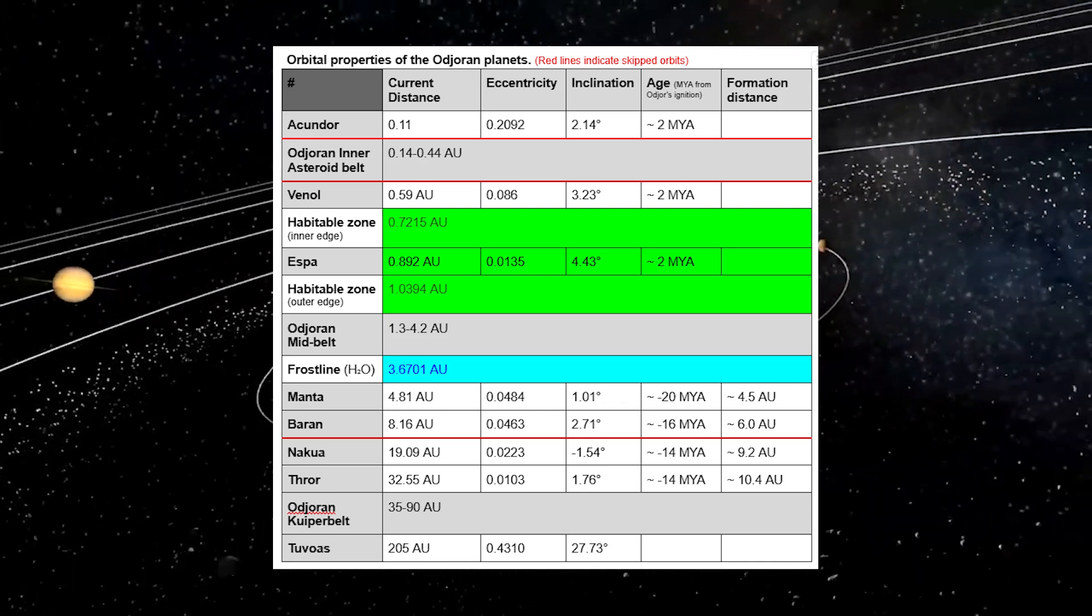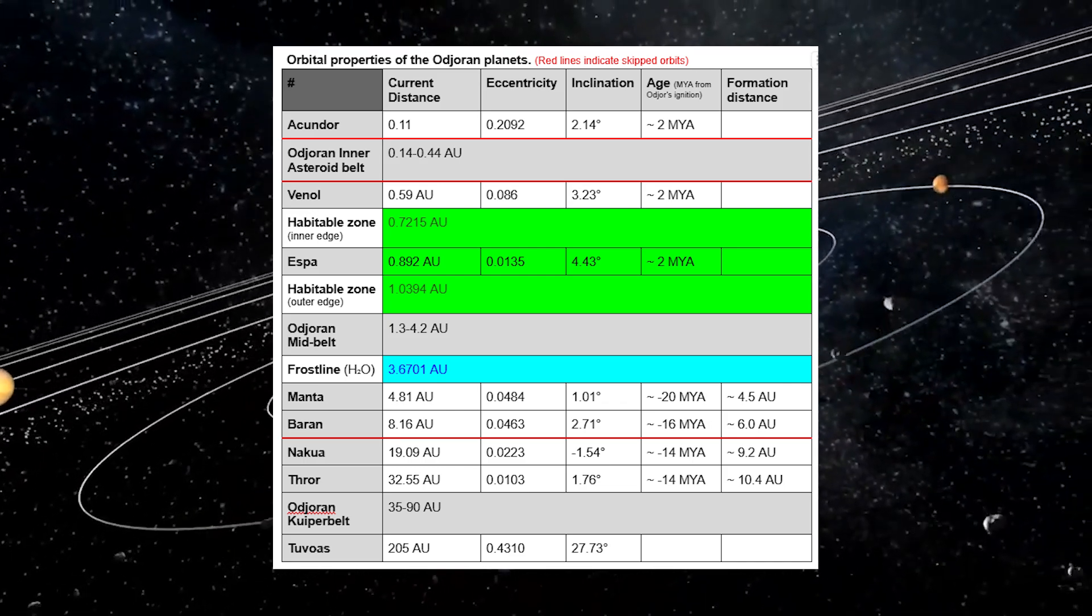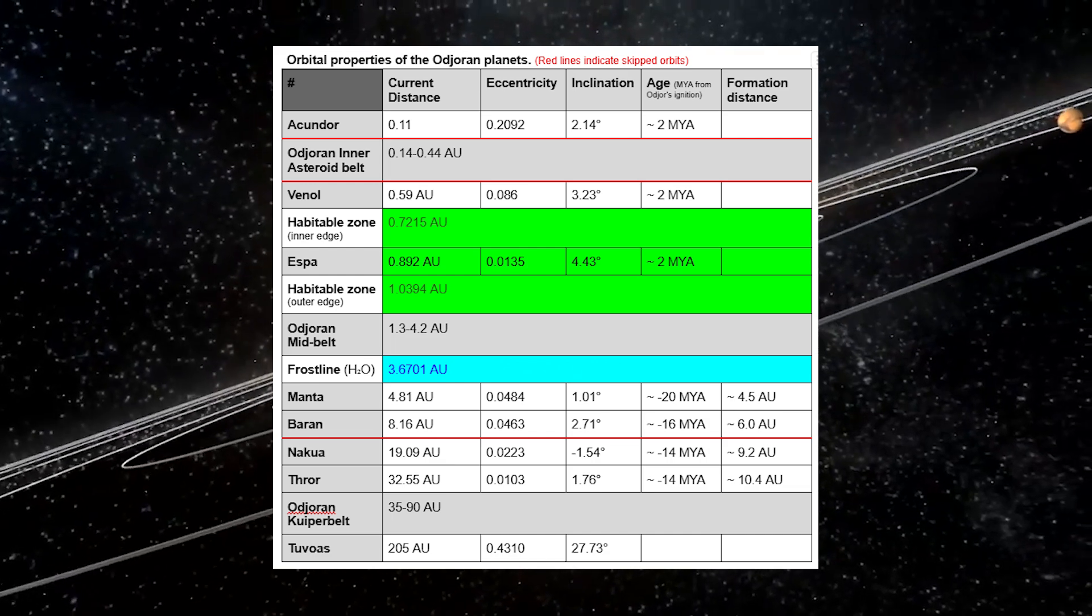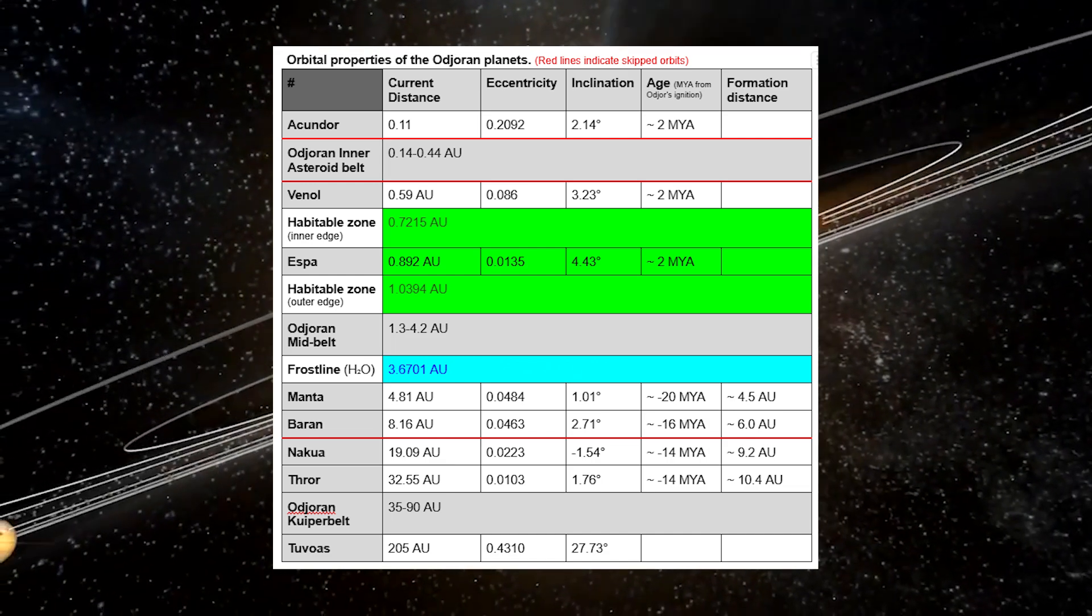Putting all these values into a table, we get this: a fully-fledged orbital template for the Ojoran system. There is some weird thing at the bottom, we'll get into that in due time. But for now, I'm very happy with this, as it will provide the basis for our planetary system.